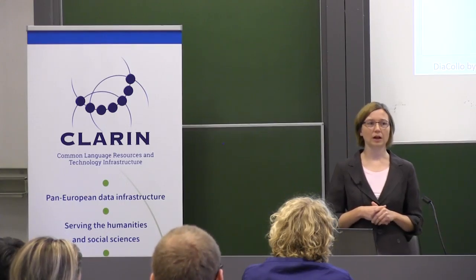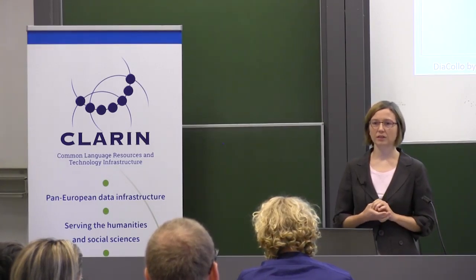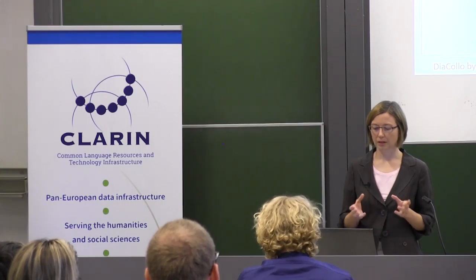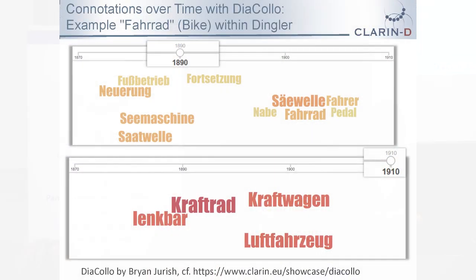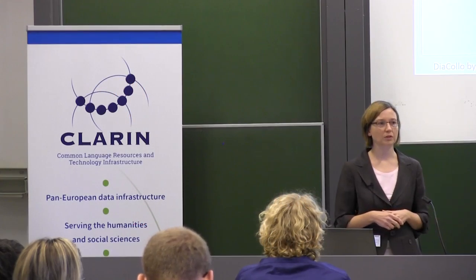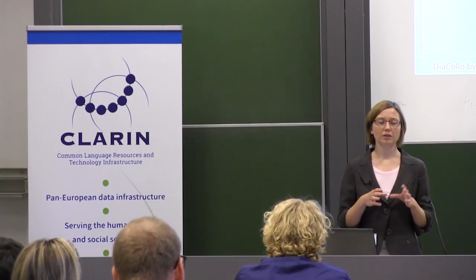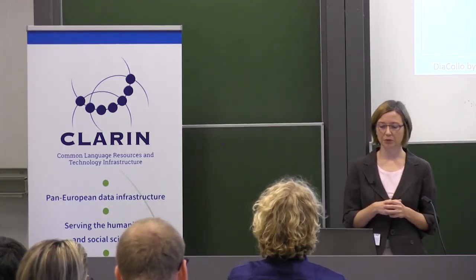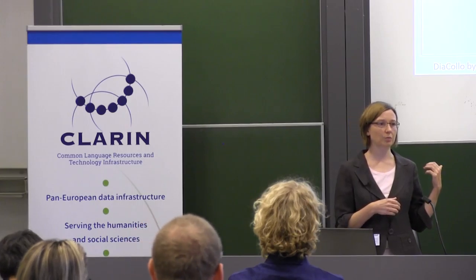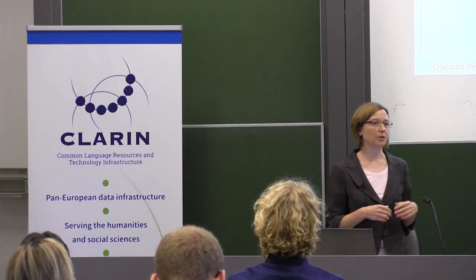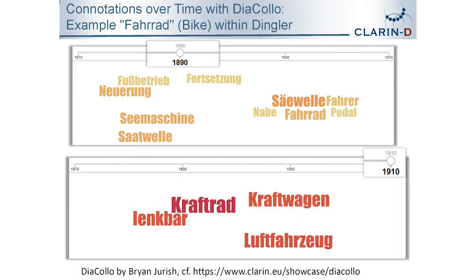We have a tool called Diacolo, implemented by my colleague Brian Juric, which retrieves collocations of a word. I searched for the term 'bike' — Fahrrad in German — and get collocations through time, so you can see how the discourse around a term has changed. Searching the Dingler Polytechnisches Journal, in 1890 the connotations of 'bike' were things like 'paddle,' 'biker,' or 'running by foot,' whereas by 1910 it was all about automobile, motor, craft, and aircraft.